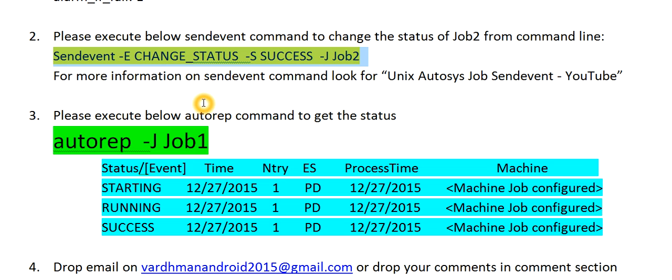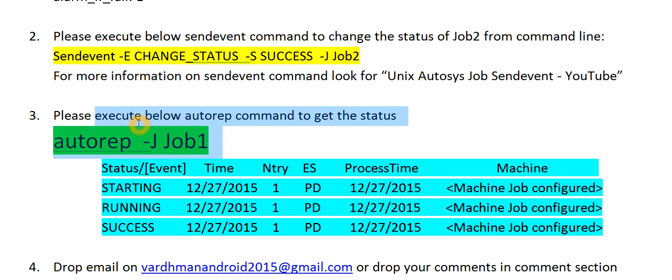To check the status of whether job one is getting triggered or not, you can use the command autorep -J job_one. This will give you the status of that job. That is how you can forcefully start a dependent job.